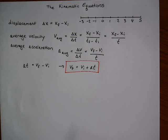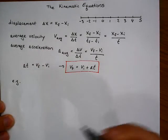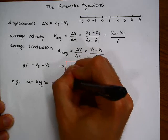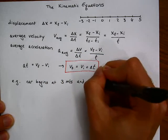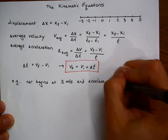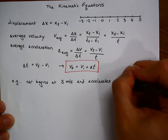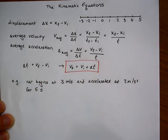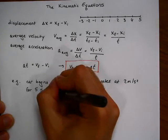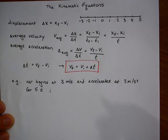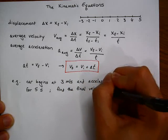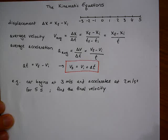Here is how we use it. For example, a car begins at 3 meters per second and accelerates at a uniform rate of 2 meters per second squared for 5 seconds. We might want to find the final velocity.